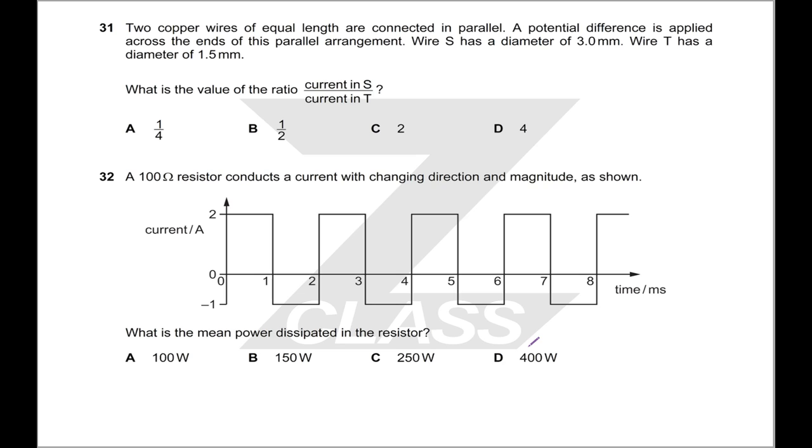Two copper wires of equal length are connected in parallel. Potential difference is applied across the ends of this parallel arrangement. Wire S has a diameter of 3 mm. Wire T has a diameter of 1.5 mm. What is the value of the ratio current? So current I is inversely proportional to the resistance. And resistance is inversely proportional to the area of your wire. The wider your wire, the lower the resistance. And lastly area is proportional to the diameter squared. Putting all those back in, you can get that your current is going to be proportional to your diameter squared and then put in your ratio. Because your ratio of diameters is just 2.